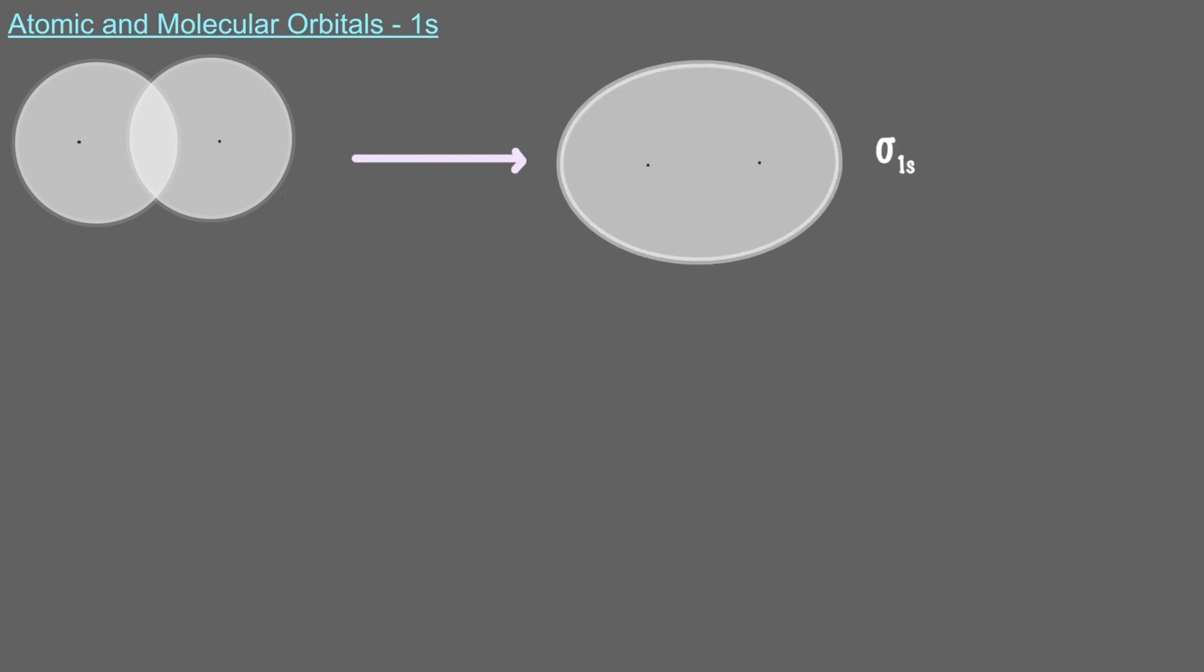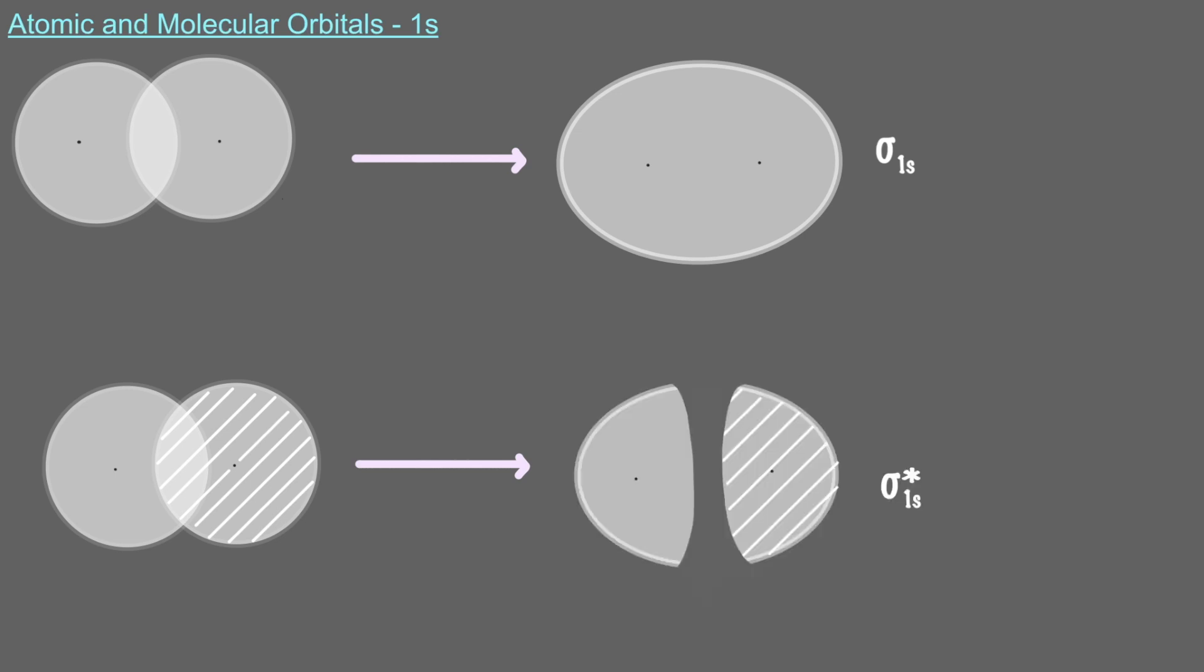So when two 1s orbitals overlap in phase, the result is a sigma 1s bonding orbital. And when two 1s orbitals overlap out-of-phase, the result is a sigma star 1s antibonding orbital.